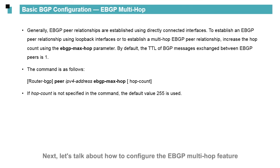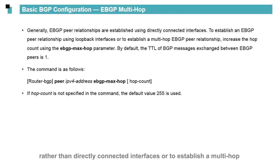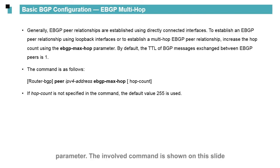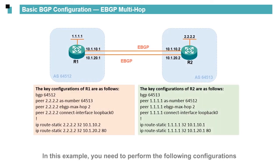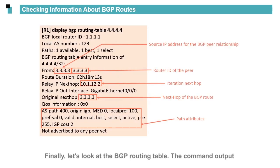Next, let's talk about how to configure the eBGP multi-hop feature. To establish an eBGP peer relationship using loopback interfaces rather than directly connected interfaces, you need to establish a multi-hop eBGP peer relationship. Increase the hop count using the eBGP max-hop parameter. The involved command is shown on this slide. Finally, let's look at the BGP routing table — the command output shows all path attributes and related parameters.